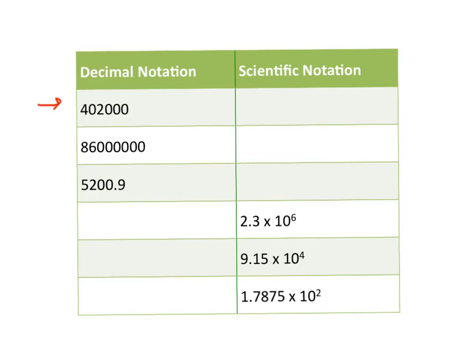For my first number, I'll need to move my decimal place over 1, 2, 3, 4, 5 hops to get a number between 1 and 10. And so my answer in scientific notation will be 4.02 times 10 to the 5th.